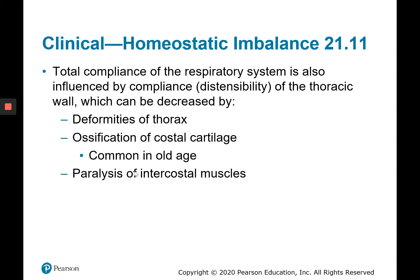Ossification of the costal cartilage would diminish the thoracic cage's ability to expand, and therefore diminish the ability of the lungs to expand, decreasing the efficacy of pulmonary ventilation. There could also be paralysis of the intercostal muscles. The external intercostal muscles are inspiratory muscles whose contraction causes the rib cage to rise and the lungs to expand. Any interference with the thoracic cavity's expansion will decrease lung compliance.